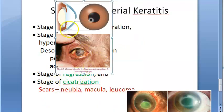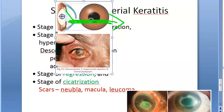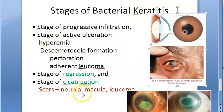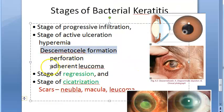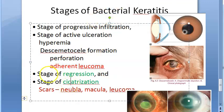If this person coughs or sneezes, there can be a perforation. All the aqueous humor will come out, and the iris or lens can prolapse forward. This Descemetocele can go on to become an adherent leucoma.